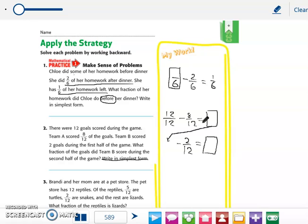So you're taking this answer and you're doing a second operation with it with the 2 goals that they scored in the first half to figure out the second half. And then you're going to write your sentence here. The question is what fraction of the goals did Team B score during the second half? So you'd say Team B scored the answer goals during the second half of the game. And remember you're writing it as a fraction. And since we're talking about like fractions, the denominator is going to be 12.